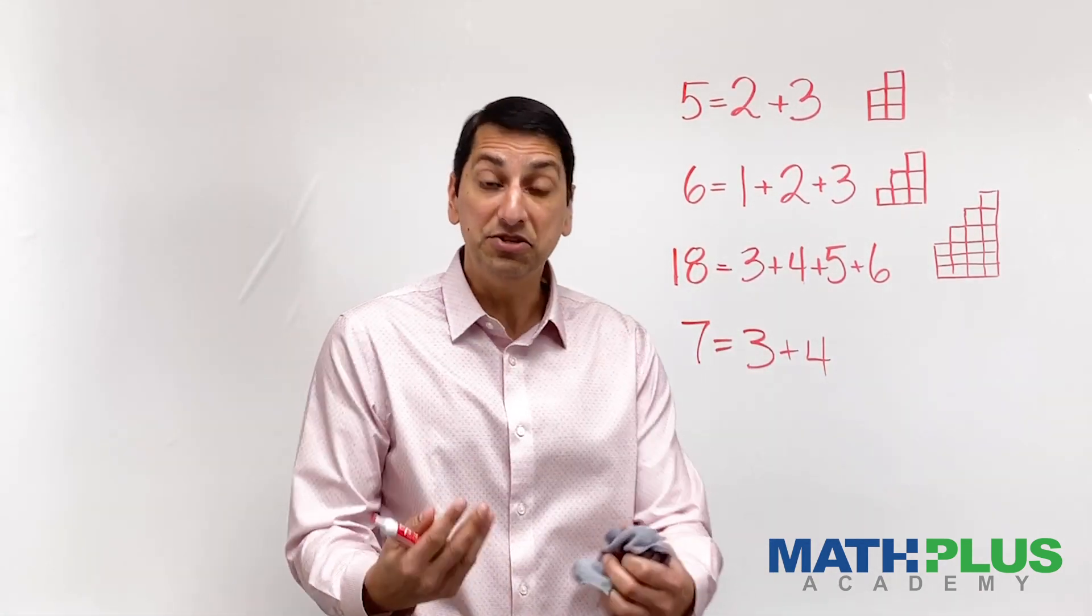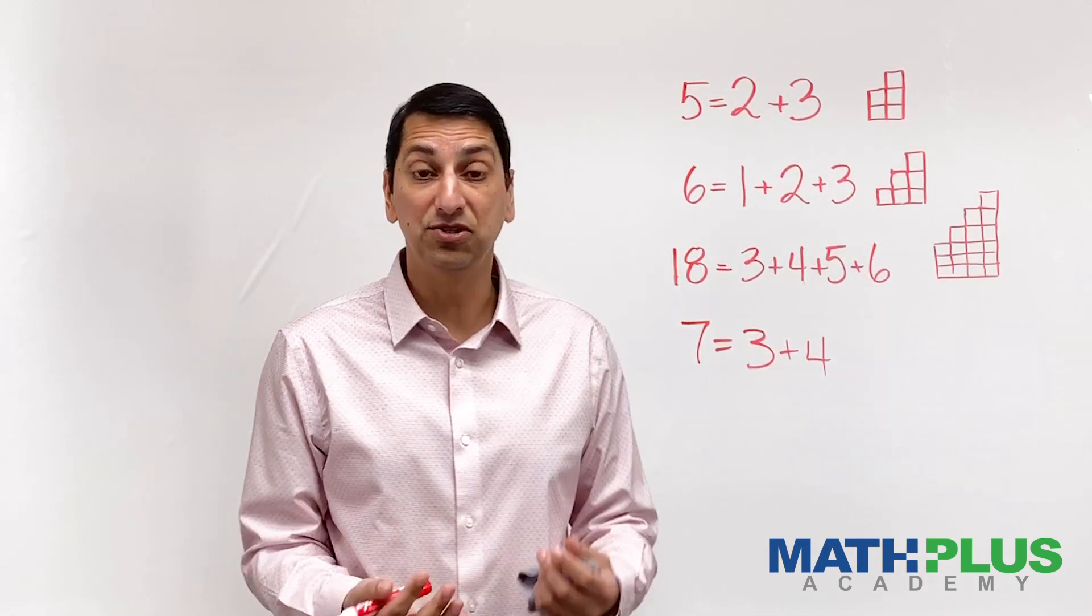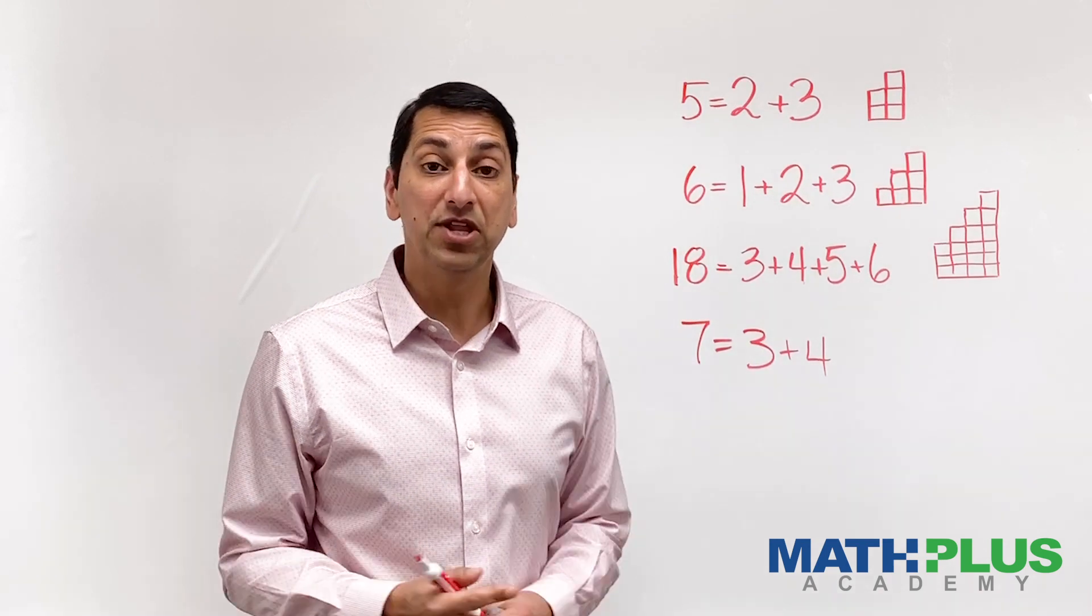3 plus 4 is 7. So you can write 7 as a consecutive sum of at least 2 numbers. Okay? So that's what I want you to try.